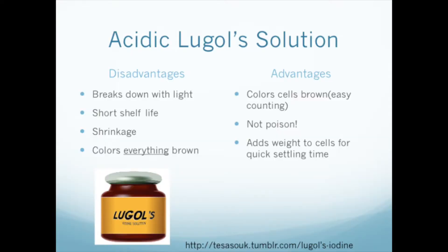The disadvantages of using Lugol solution are that it breaks down with light and has a fairly short shelf life of about 6 months before more needs to be added. It also causes shrinkage of the phytoplankton cells that needs to be accounted for when calculating biovolumes. The triiodide color dyes everything, including debris, brown. However, this is slightly advantageous because it colors active cells very brown and makes them easier to enumerate. It's relatively benign, and the added bonus is that iodine entering the cell membrane makes the plankton more dense and allows them to sink quickly.